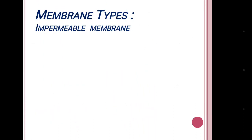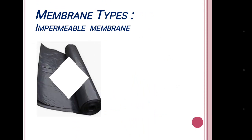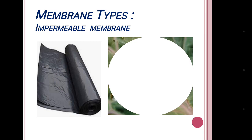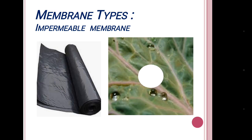Next are the types. The first one is impermeable membrane — for example, plastic or polythene, and the cuticle of leaves which is made up of cutin. It is impermeable because it doesn't allow any solute or solvent to pass.